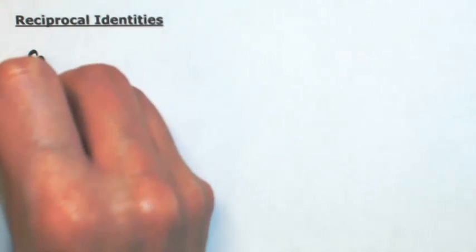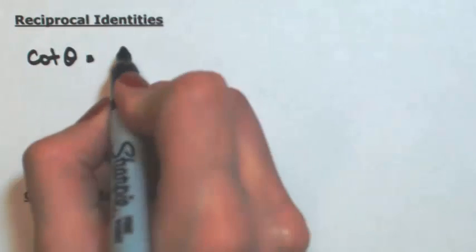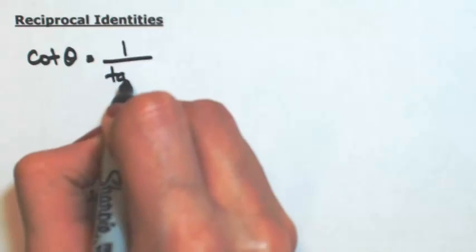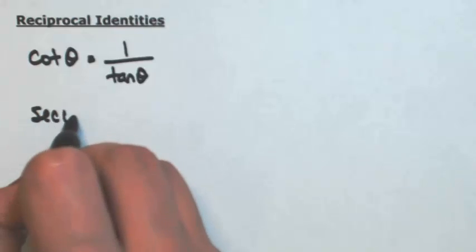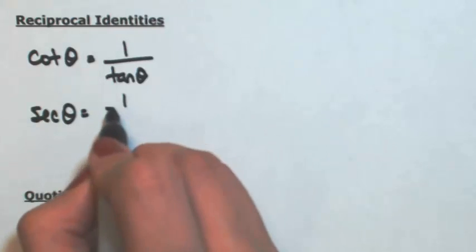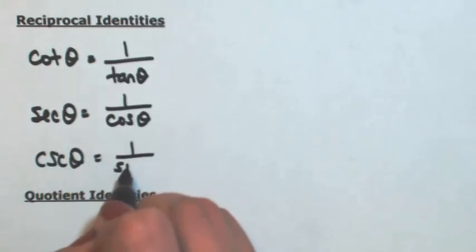Let's look at some identities of our trig functions, first of which we'll look at as the reciprocal identities. Let's start with the cotangent of the angle. We've actually seen this before — cotangent is basically the reciprocal of tangent, so this is 1 over the tangent of theta. We also saw that the secant of theta is 1 over the cosine of theta, and the cosecant of theta is 1 over the sine of theta.